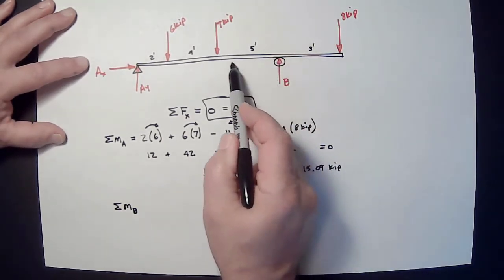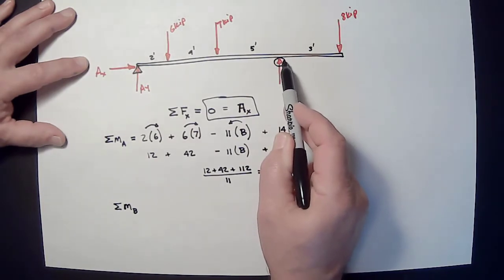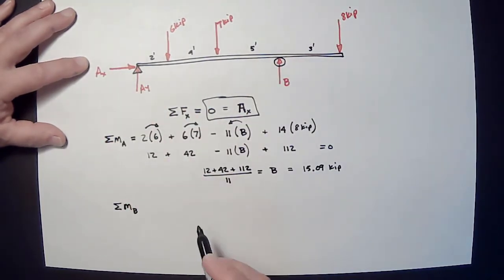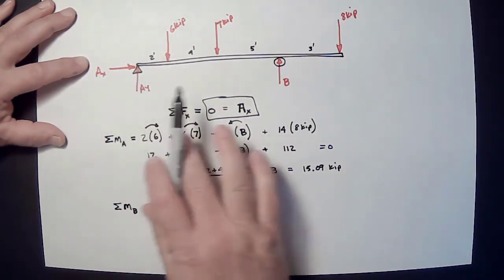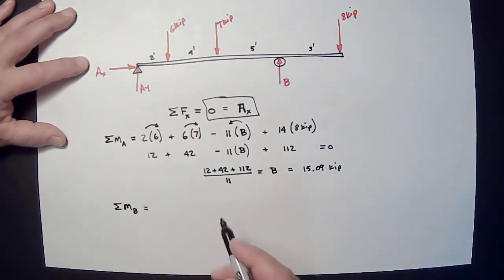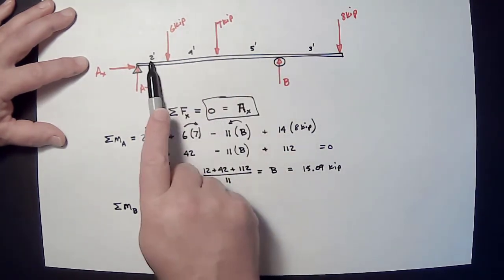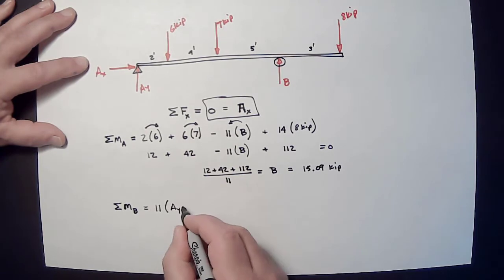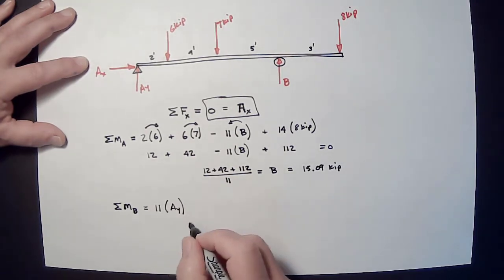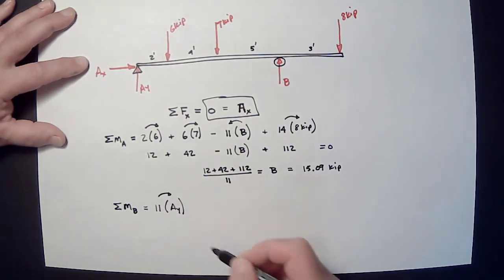Again, the line of force from AX, even though it's zero, goes right through B. So, it does not contribute to the moment. AY, on the other hand, is perpendicular to the line of force. So, it does contribute to the moment. Five plus four plus two is eleven. That's the moment arm. And AY is the force. I don't know what that is yet. And it is going clockwise.